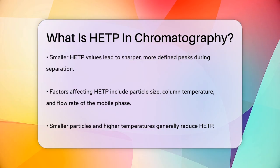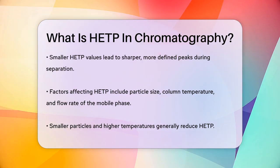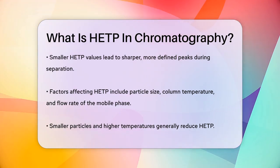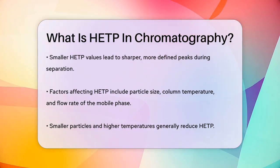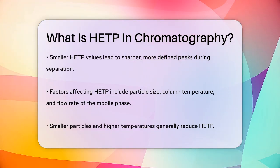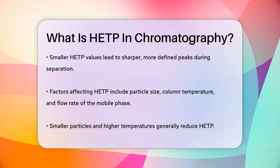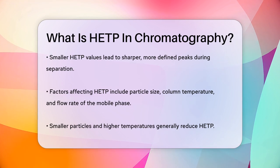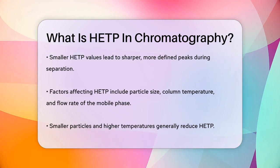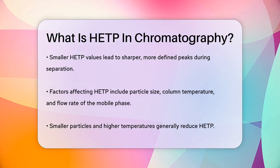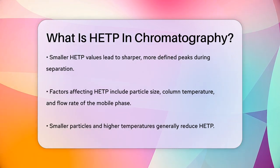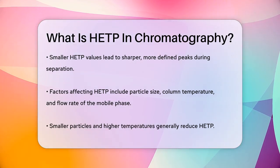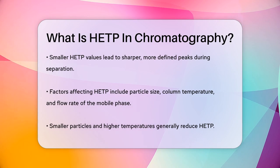There are several factors that affect HETP, such as the particle size of the column material, the column temperature, and the flow rate of the mobile phase. For example, smaller particles and higher temperatures can reduce HETP, while higher flow rates can increase it.